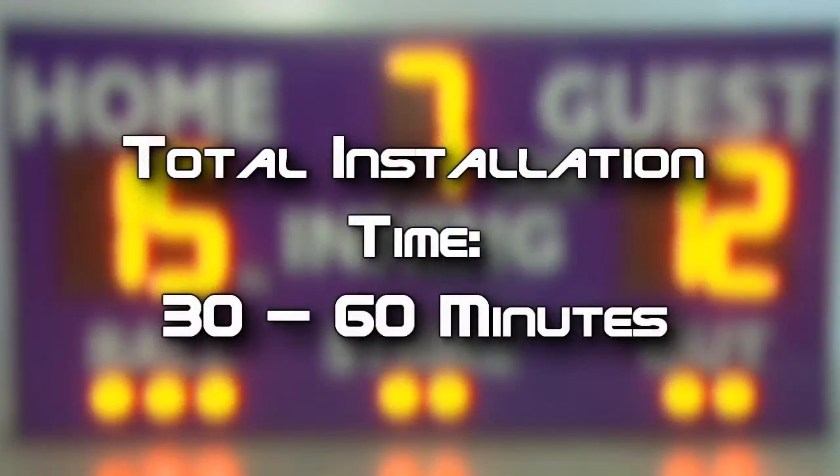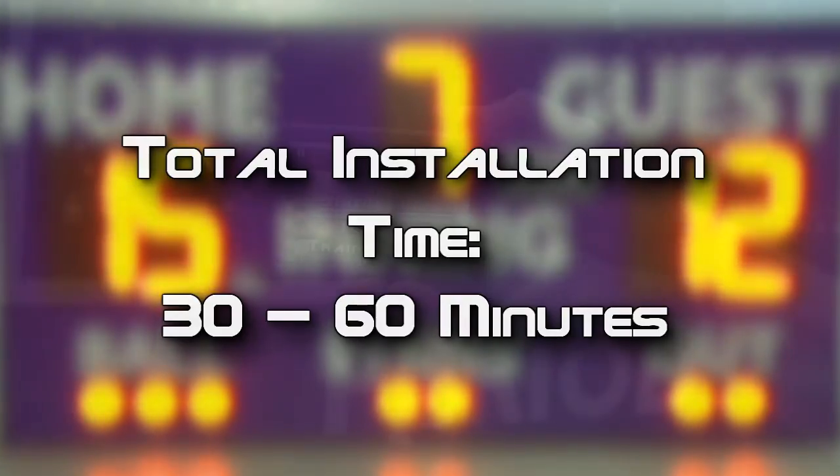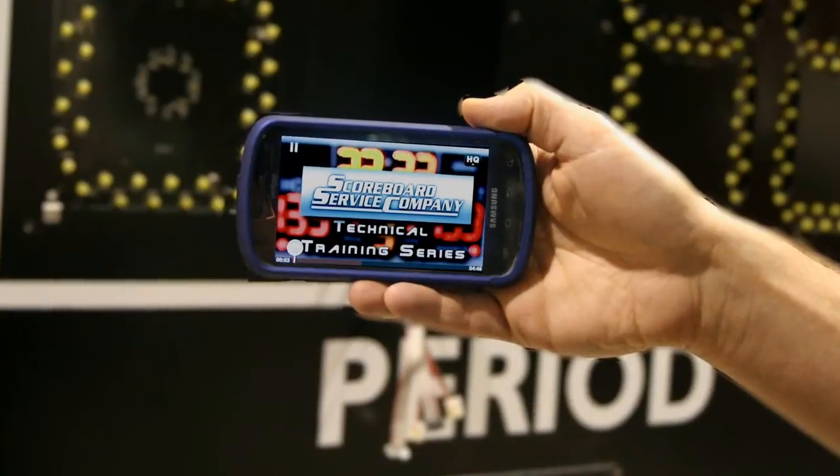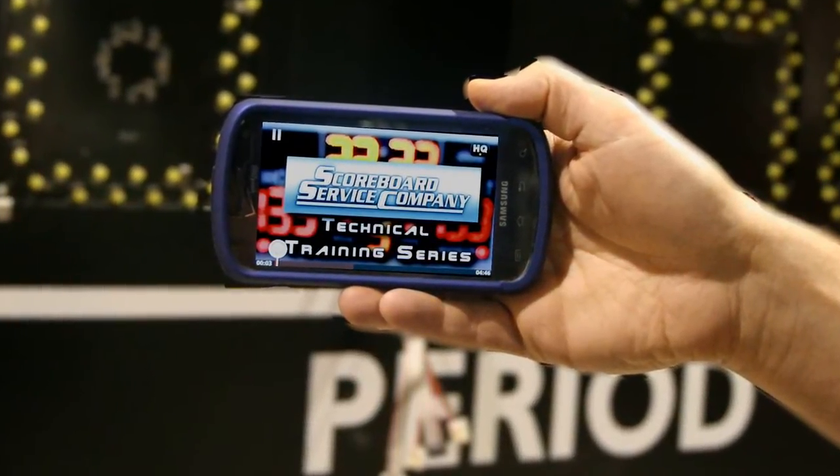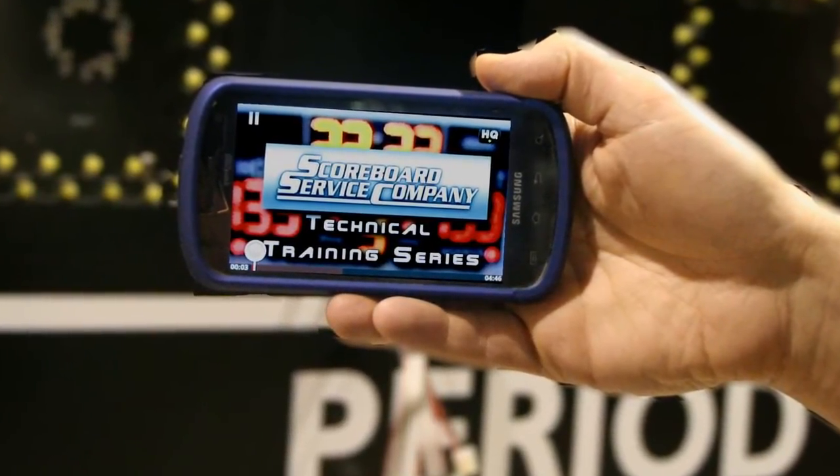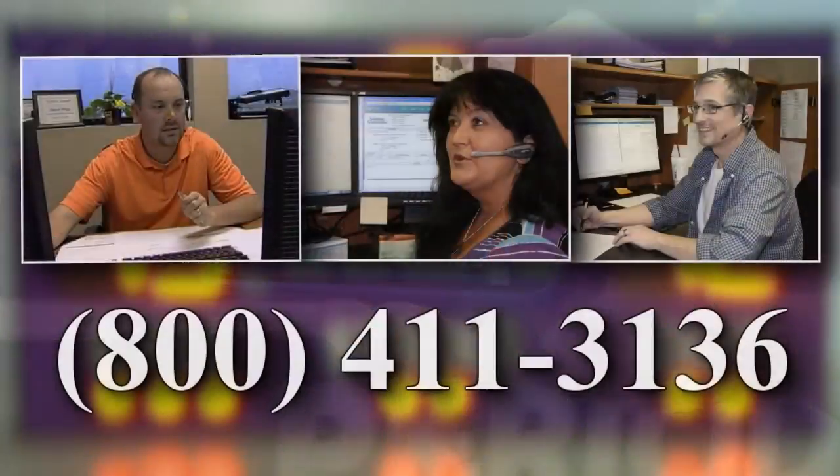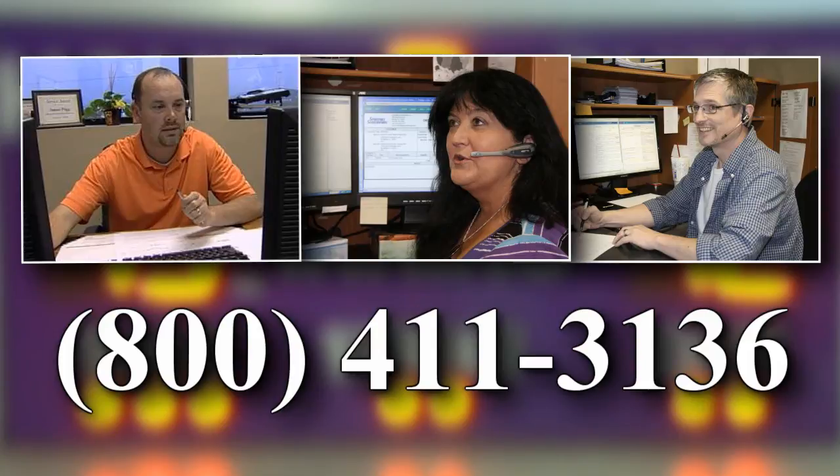This repair should take approximately 30 to 60 minutes. If you have access to a wireless internet signal at the job site, you may be able to use your laptop, tablet or smartphone to review this video while working on your scoreboard. Consult your scoreboard service company technician for any questions or assistance during the removal and installation of a digit.